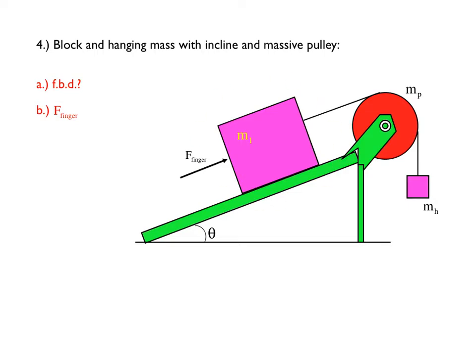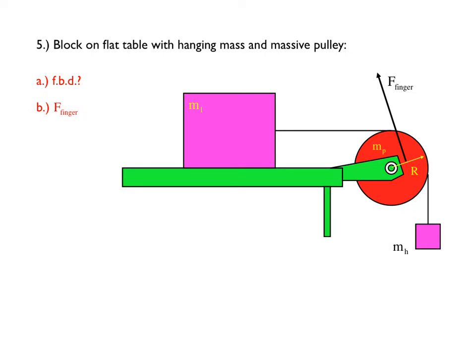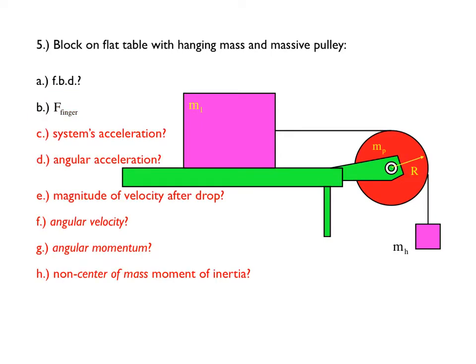You have a block sitting on an incline. There's a string attached to it, goes up over a massive pulley, is attached to a hanging mass. A finger applies force to the block, keeping it in equilibrium. Remove the finger, what's the system's acceleration, what's the angular acceleration of the pulley, what's the magnitude of the velocity after the block had moved down some distance, what's the angular velocity of the pulley at that point, what's the angular momentum of the pulley at that point, what's the moment of inertia about some axis other than through the center of mass of the pulley. Same problem you just looked at, except now the block is sitting on a flat table instead of an incline. Same questions as before.